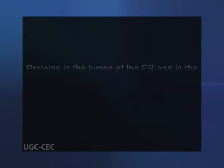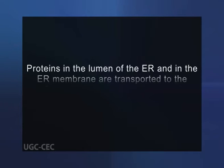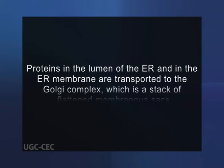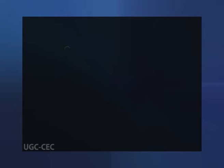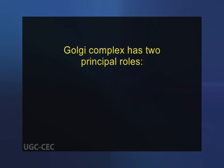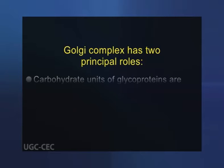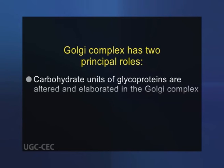Proteins in the lumen of the ER and in the ER membrane are transported to the Golgi complex, which is a stack of flattened membranous sacs. The Golgi complex has two principal roles. First, carbohydrate units of glycoproteins are altered and elaborated in the Golgi complex. The O-linked sugar units are fashioned there and the N-linked sugars arriving from the ER are modified in many different ways.